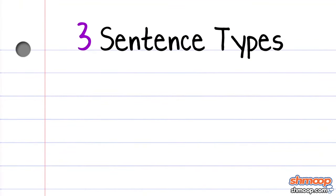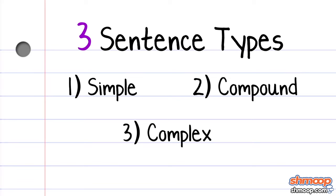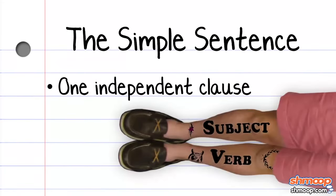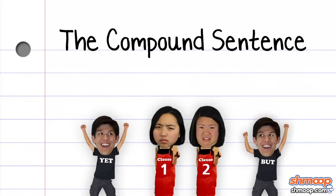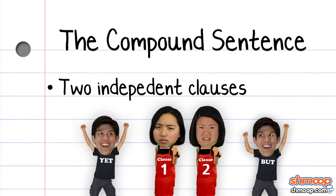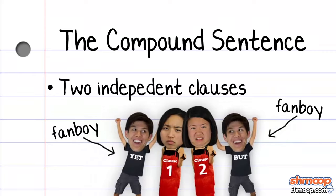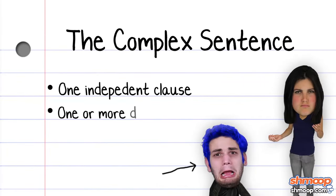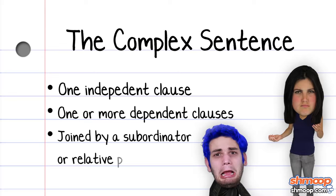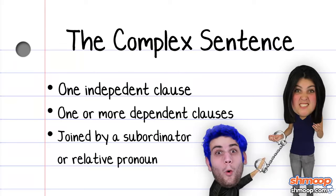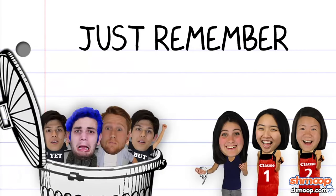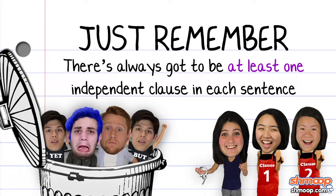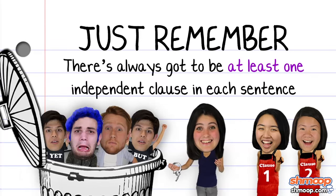There are three sentence types: simple, compound, and complex. A simple sentence is an independent clause with at least one subject and verb. A compound sentence is two independent clauses joined together by FANBOYS. A complex sentence is one independent clause plus one or more dependent clauses joined by a subordinator or relative pronoun. Just remember that there's always got to be at least one independent clause in each sentence, because somebody's got to stay independent here.